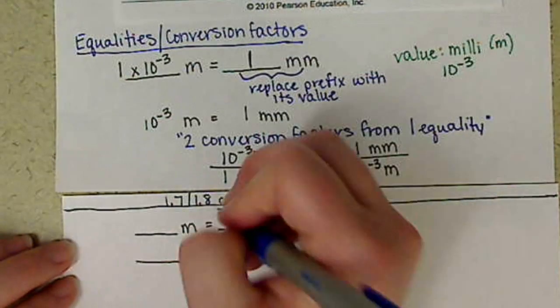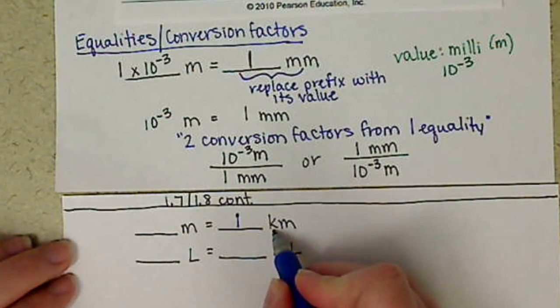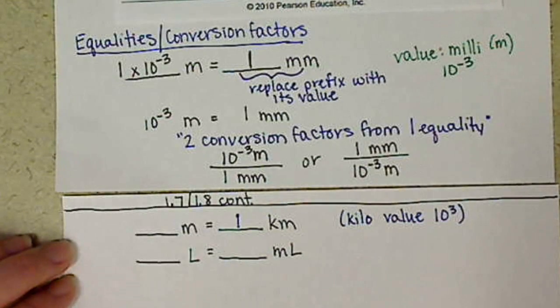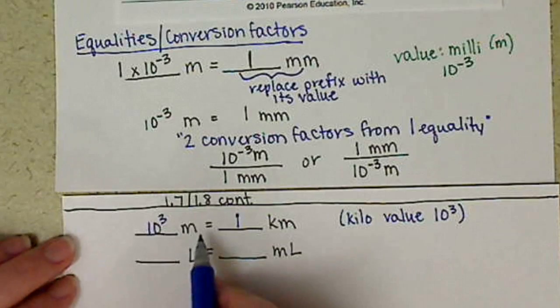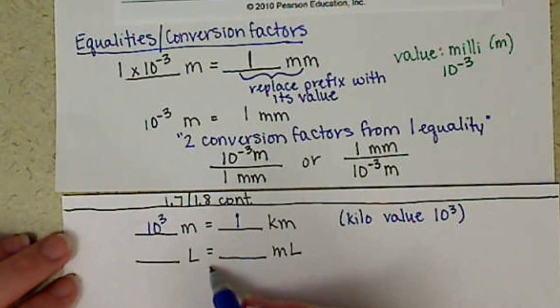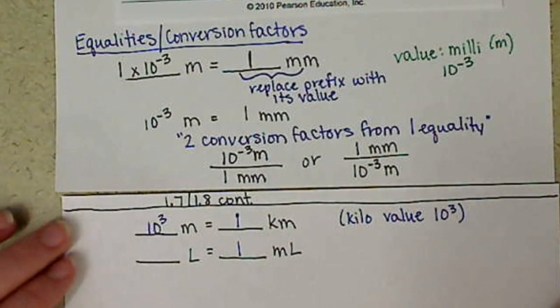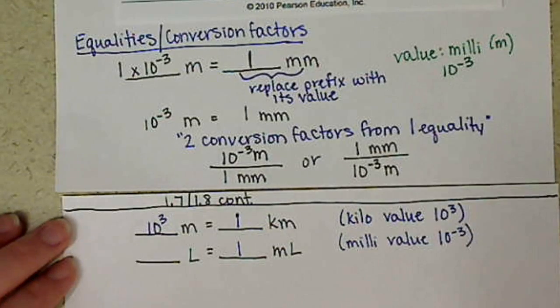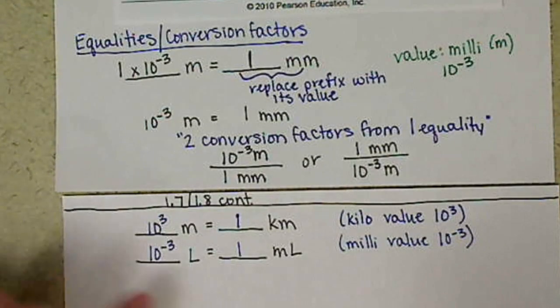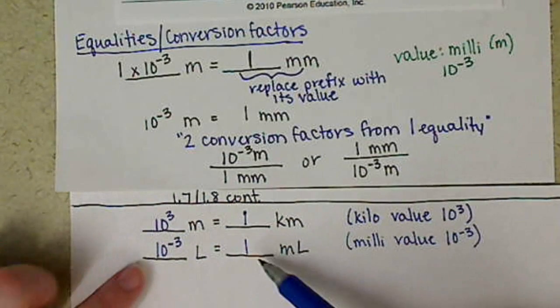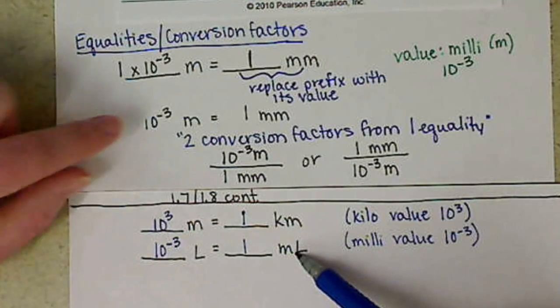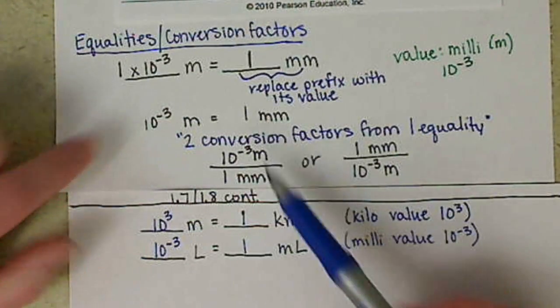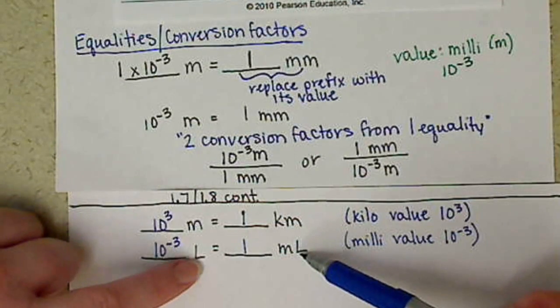For our first one here, remember we always want to put the one with our prefix. And then our kilo value is 10 to the 3. So we're going to put 10 to the 3 over with our meters. Now notice, this is the same, or at least looks very similar from liters to milliliters. When our metric is the same, we're going to be using the same numerical values. The only thing that we change is our base unit.